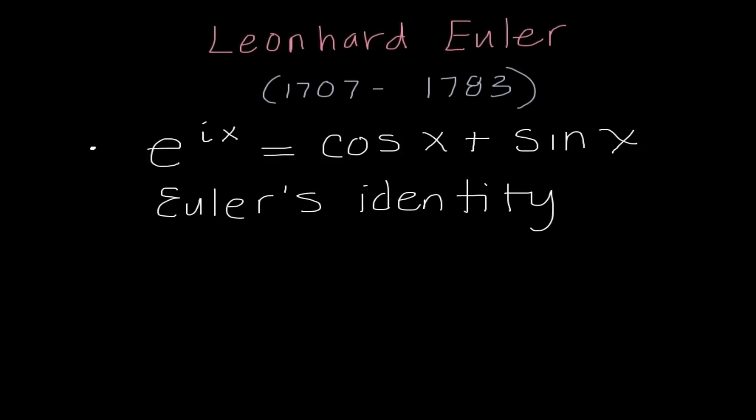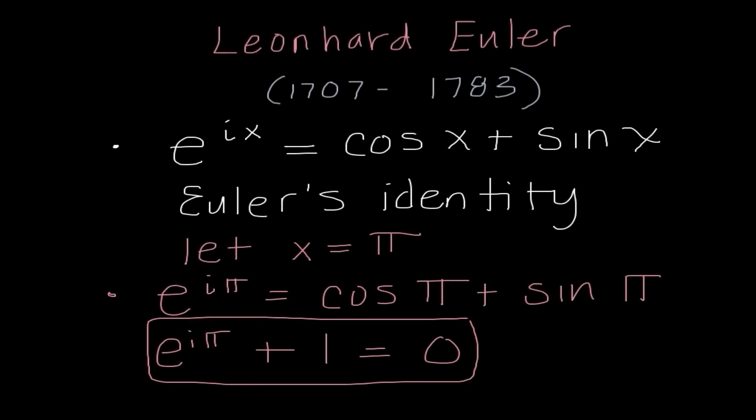If you guys ever look up Euler, one of the first things that will pop up is Euler's identity. And it is this equation e to the ix equals the cosine of x plus the sine of x. And this formula is actually really, really famous and really important.